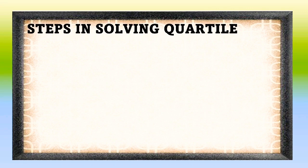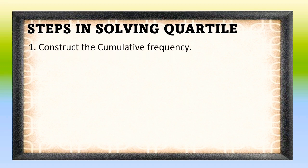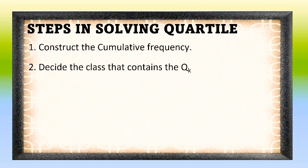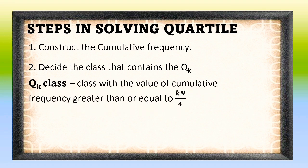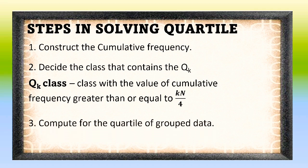Let me present to you the following steps in solving quartiles for grouped data. First, construct the cumulative frequency. Second, decide the class that contains Q sub k. The Q sub k class is a class with a value of cumulative frequency greater than or equal to k times n over 4. Number 3: compute for the quartile of grouped data. These steps will be shown on the succeeding examples on the next slides.